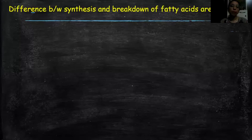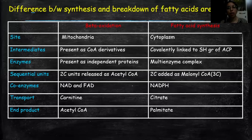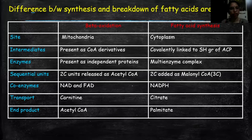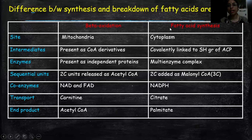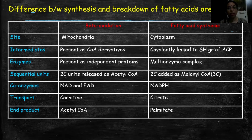In beta-oxidation, there is a breakdown of fatty acids. For example, palmitic acid breakdown — the site of beta-oxidation is the mitochondria, and the site of fatty acid synthesis is the cytoplasm. In beta-oxidation, ATPs are produced, while in fatty acid synthesis, fatty acids are produced. Fatty acid synthesis occurs in the cytoplasm, but ATP is formed in the mitochondria.